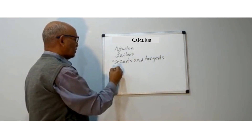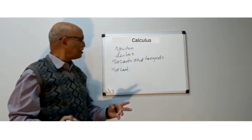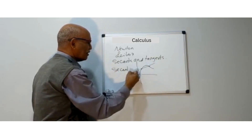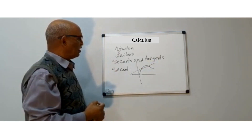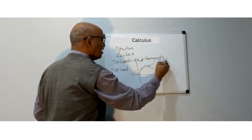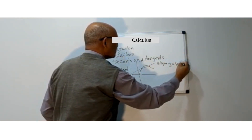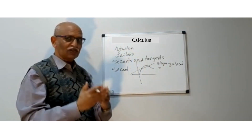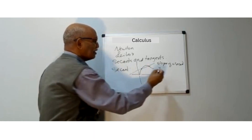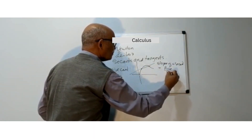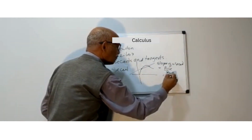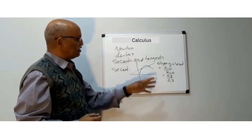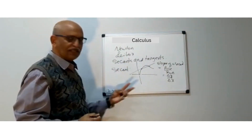Let's see what a secant is. A secant is any line joining two points on a curve. Since a secant is a line, I can find the slope of a secant. How do I find the slope of a secant? The slope of a secant is exactly the same way we learned in grade 9 — I need two points to find the slope of a line. Therefore, it is rise over run, which means the difference in y over the difference in x, or delta y over delta x.